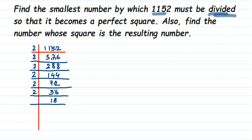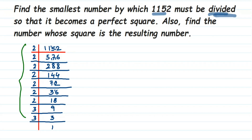Now we have 18. 18 divided by 2 gives 9. Nine is an odd number so I'll take the next prime number which is 3. 9 divided by 3 gives 3, and 3 divided by 3 gives 1. Once we've done this, we write down all the prime factors we got. So 1152 equals — let me count the twos: one, two, three, four, five, six, seven — we got seven 2s and two 3s.